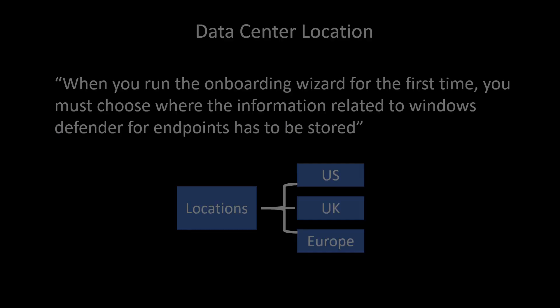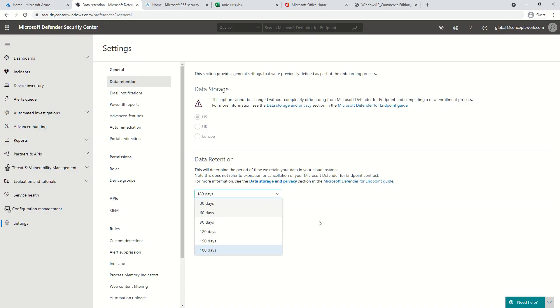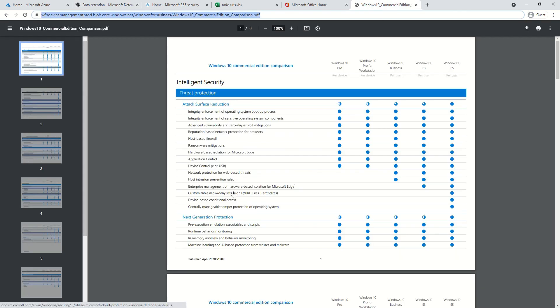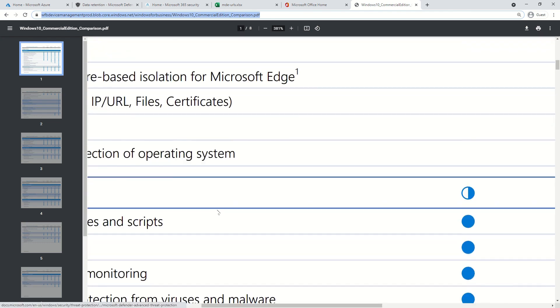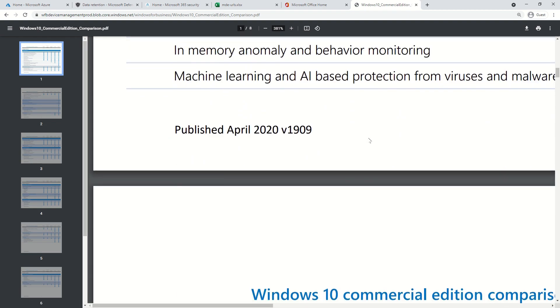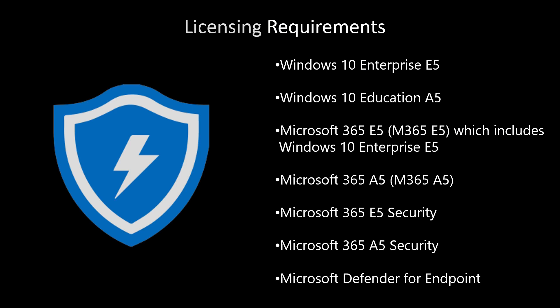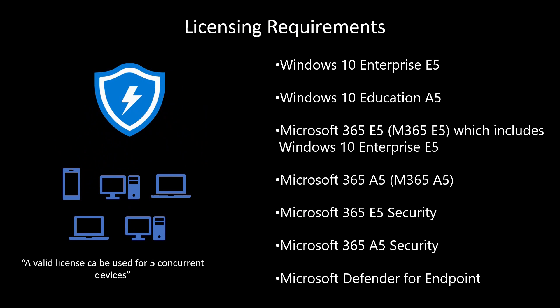The next thing is the license requirement. You can use any of the listed SKUs to use Microsoft Defender for Endpoints. Depending on the Windows version in your enterprise, you can check a PDF document — which I'll share in the description — that lists which features are available for each Windows version. Also, with every active license assigned to a user, five concurrent devices can be onboarded.